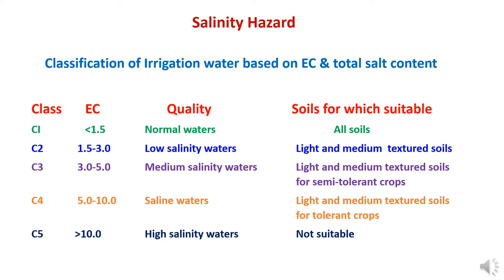Now to study salinity hazard — the classification of irrigation water based on electrical conductivity and total salt content. On the basis of electrical conductivity, there are various classes of irrigation water quality. If EC is less than 1.5, it comes under C1 class, classified as normal water and suitable for all soils. Water with EC between 1.5 to 3 mmhos per centimeter comes under class C2, referred as low salinity water, suitable for light and medium textured soils.